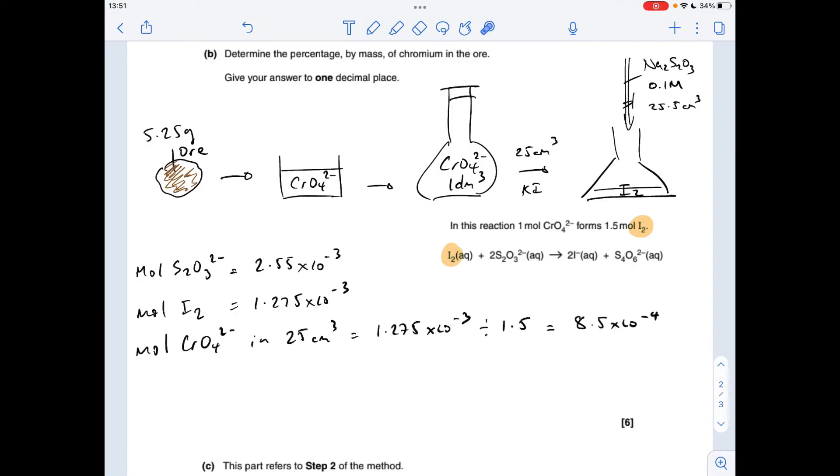Okay, so now we know how many moles of the CrO₄²⁻ ions were in the 25, but we want to know how many were in this one decimeter cubed flask. So that's 40 times as big, so we're going to multiply this by 40 now.